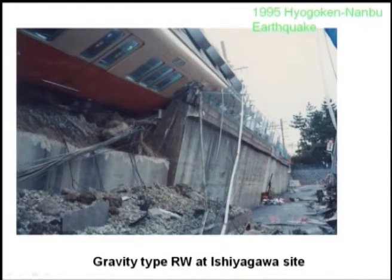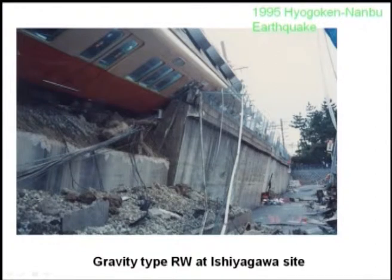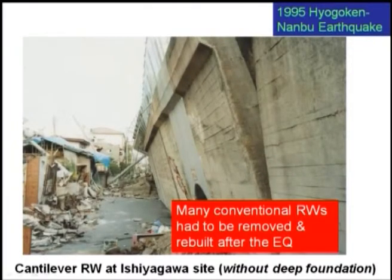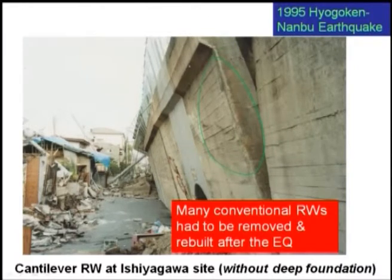Looking at the slides: here is a gravity type retaining wall that was damaged in the 1995 Nanbu earthquake. This is your gravity retaining wall — the damage caused by the earthquake can be seen. Second is a cantilever retaining wall, also damaged due to the 1995 Nanbu earthquake.